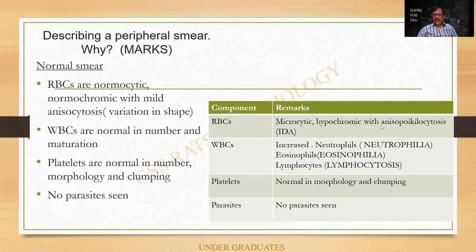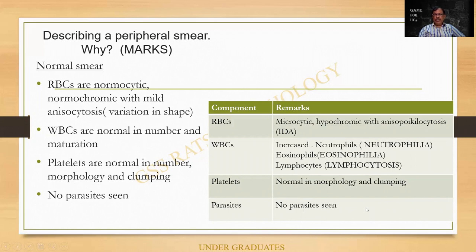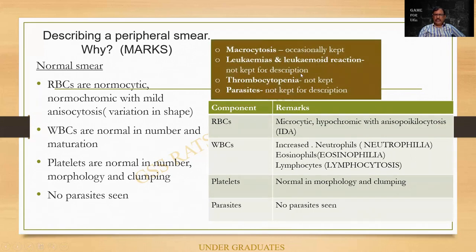These are some variations we can get. Sometimes you can get a microcytic hypochromic smear — do the description; probably it is iron deficiency anemia. WBCs may show increased neutrophils — neutrophilia. If eosinophils are increased — eosinophilia. If lymphocytes are increased — lymphocytosis. Do a differential count and express it accordingly. Platelets usually will be normal. Normally a parasitic smear is not kept for staining. Just have these variants in mind.